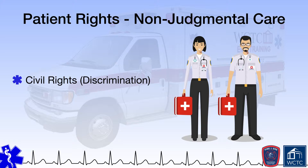The next provision states that the EMS provider will provide services based on human need with compassion and respect for human dignity, unrestricted by consideration of nationality, race, creed, color, or status, and will not judge the merits of the patient's request for service nor allow the patient's socioeconomic status to influence the EMS provider's demeanor or the care he or she provides. There are 11 specific statements within this ethical code, and the very first two are very clear about equal access to emergency medical care and equal care, compassion, and respect to everyone regardless of their background and classification in society.